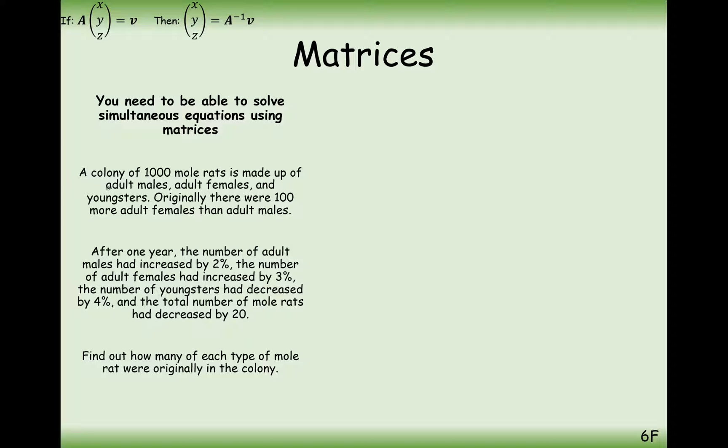What we're looking to do here is form three equations with three variables and use an inverse matrix to solve this problem. The three variables are obviously going to come from male adults, how many adult females there were, and how many youngsters there were. So we can use x, y, z to represent the number of adult males, adult females, and youngsters. The first equation is that there were originally 1,000 mole rats in total, so x plus y plus z is 1,000. The next part is that there were 100 more females than males in this colony, so y minus x is equal to 100, or we could flip it around and say x minus y is equal to minus 100.